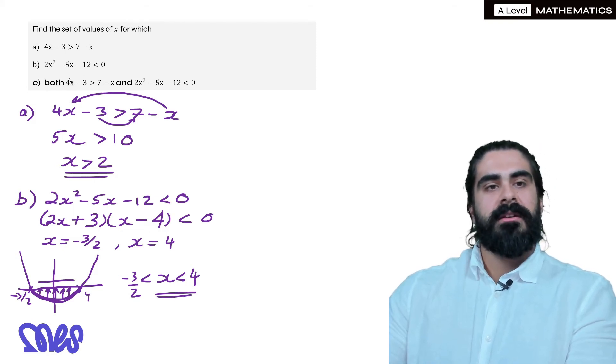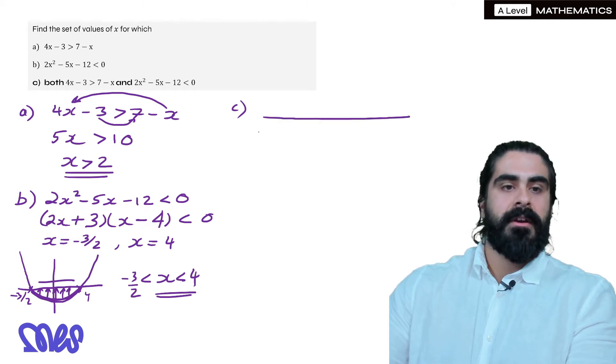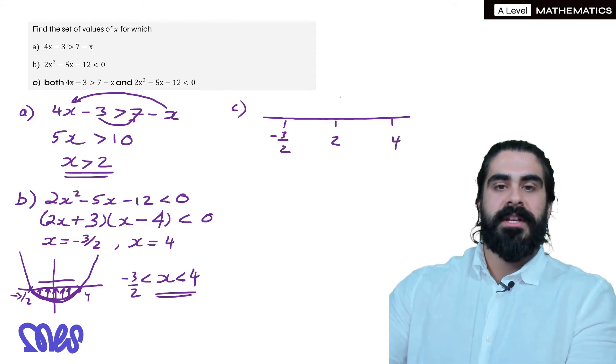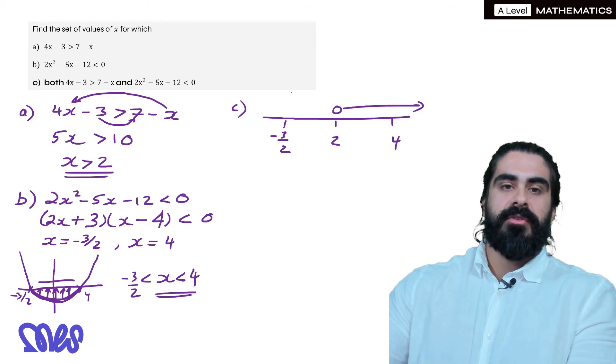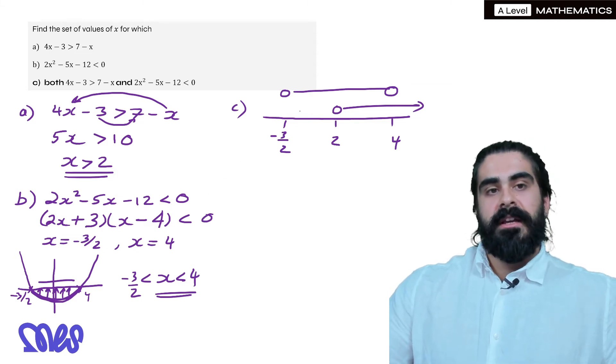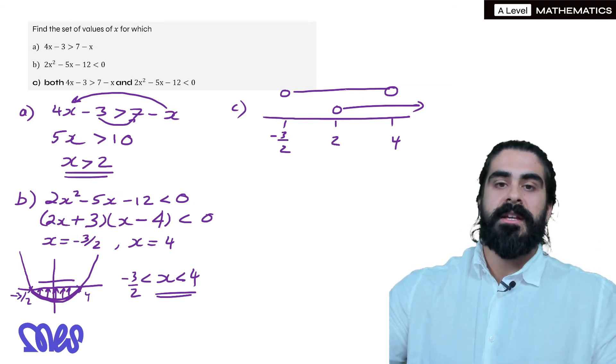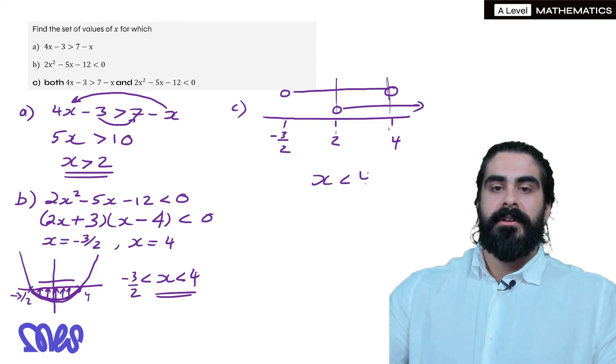For part c, it wants to know what x values satisfy both what was in part a and what was in part b. So for this, we just use a simple number line. We plot out all the numbers, so we have minus 3 over 2, we have the number 2, and we have 4. The first solution was x is bigger than 2, and the other solution was anything between minus 3 over 2 and 4. So all we need to do is we need to satisfy, well we need to write down the x values which satisfy both of these lines. And we can see it's anything between 2 and 4, that's where the overlaps are. So our solution is anything between 2 and 4.